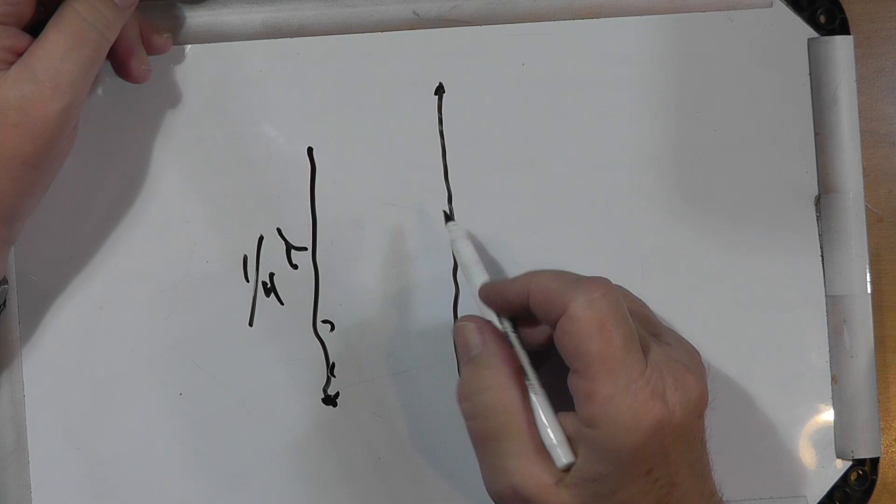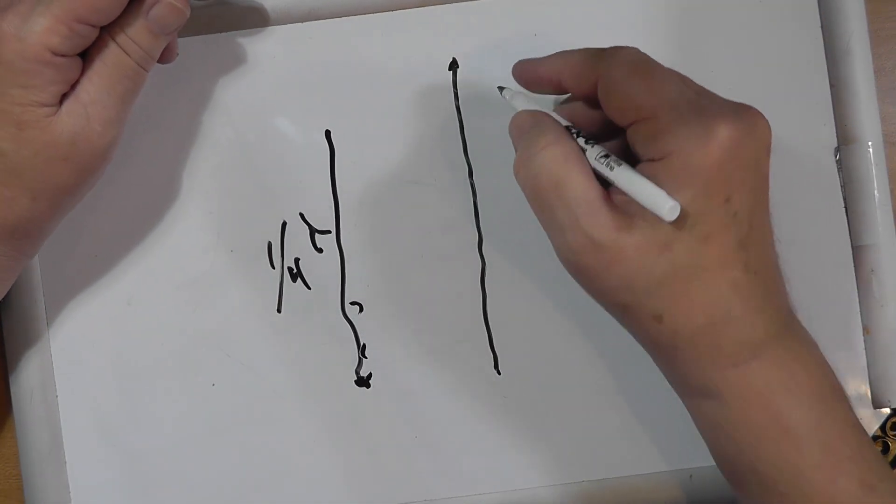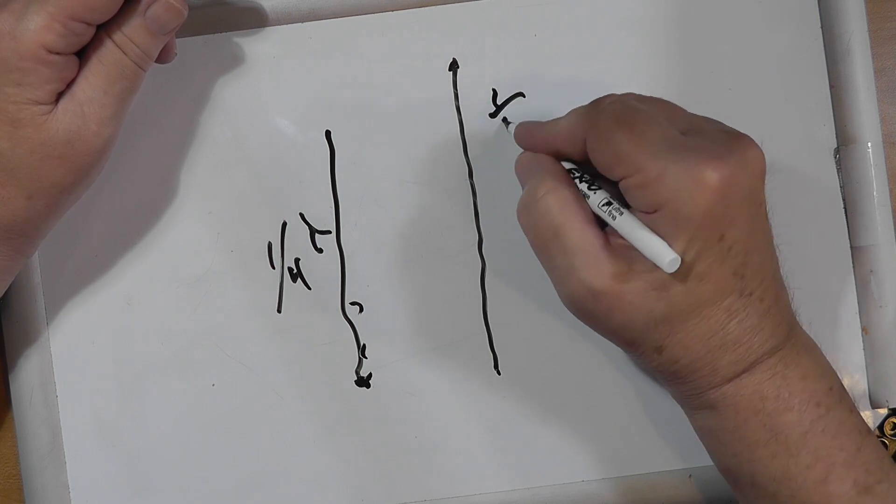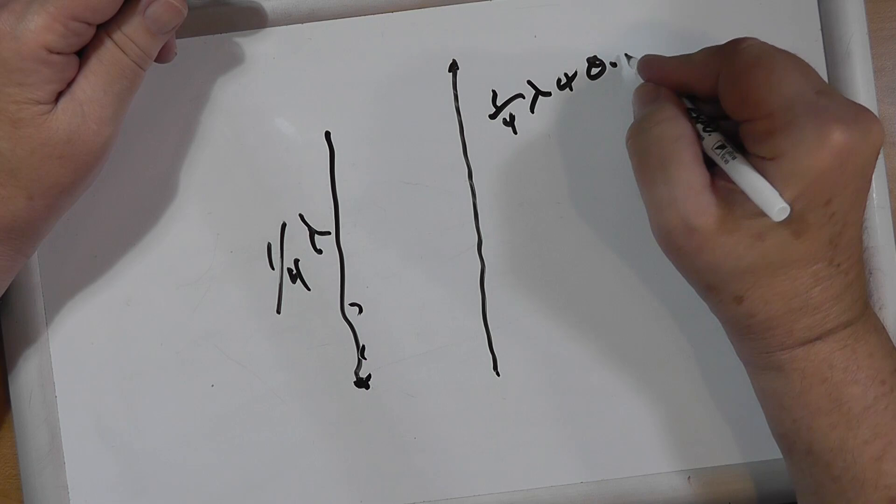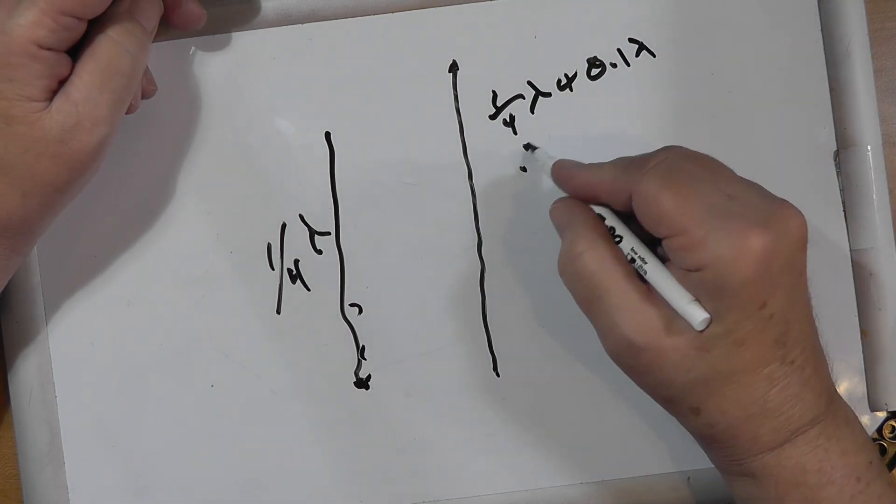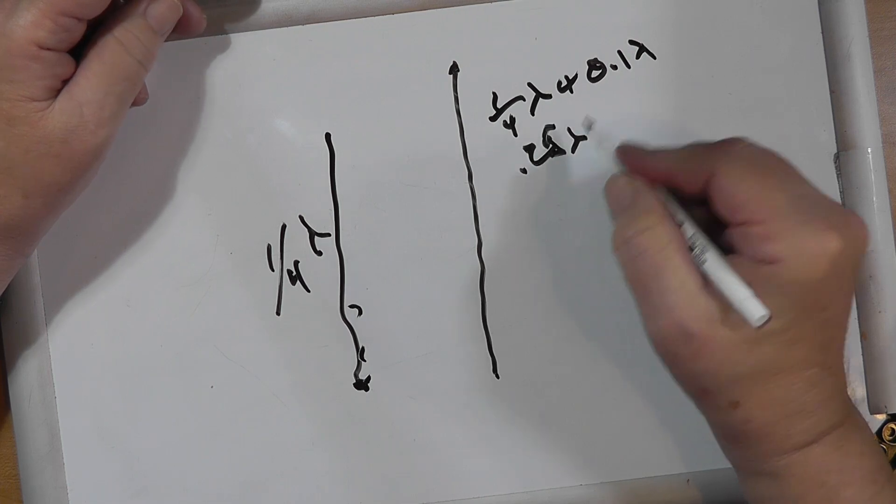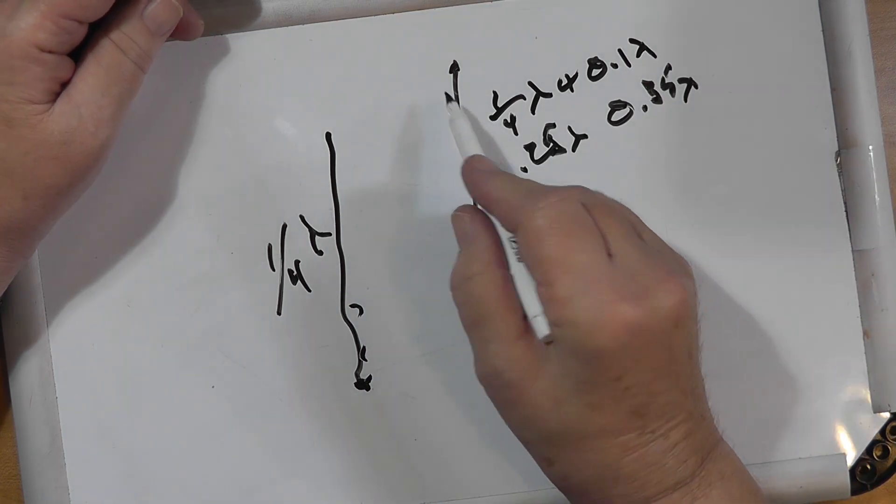This is one quarter lambda plus 0.1 lambda, so instead of 0.25 lambda it's going to be 0.35 lambda. And he's wondering if this will provide any directionality to the ensemble of antennas.